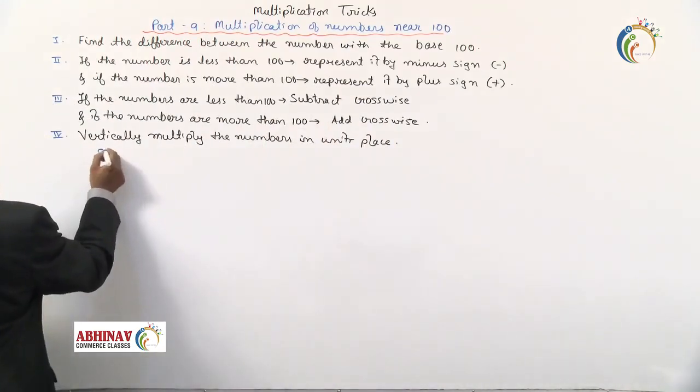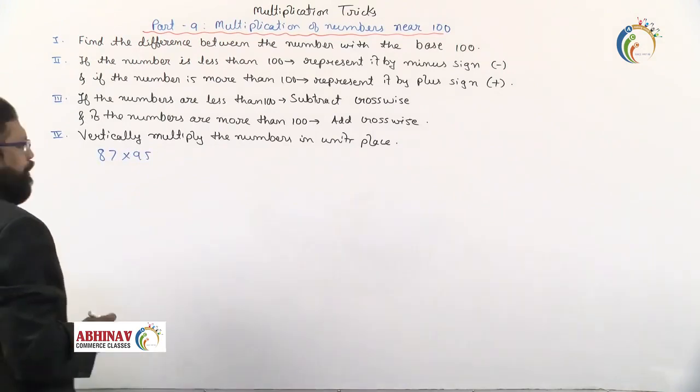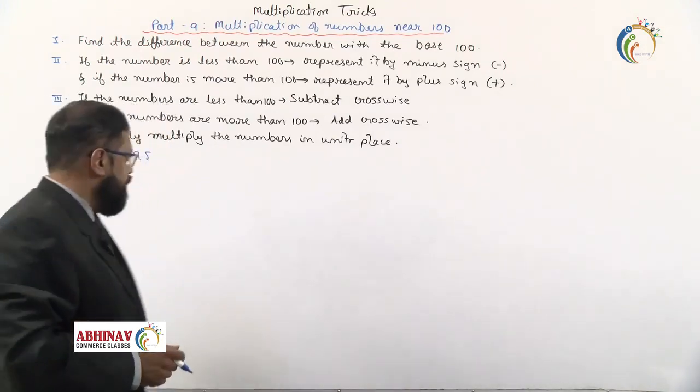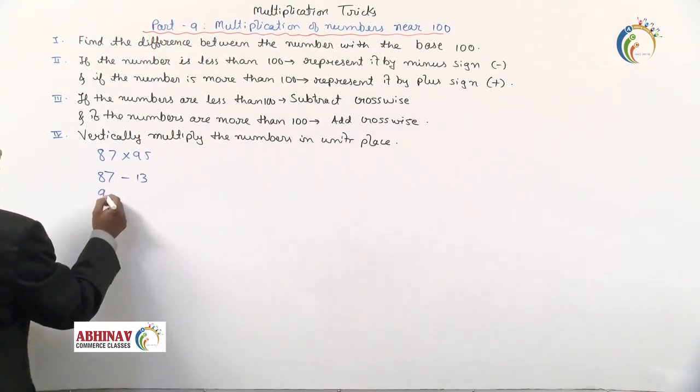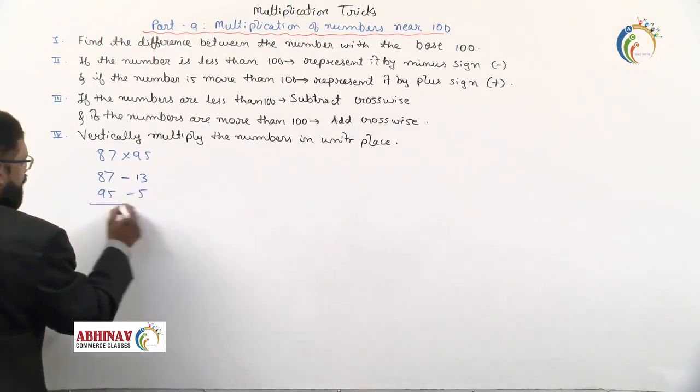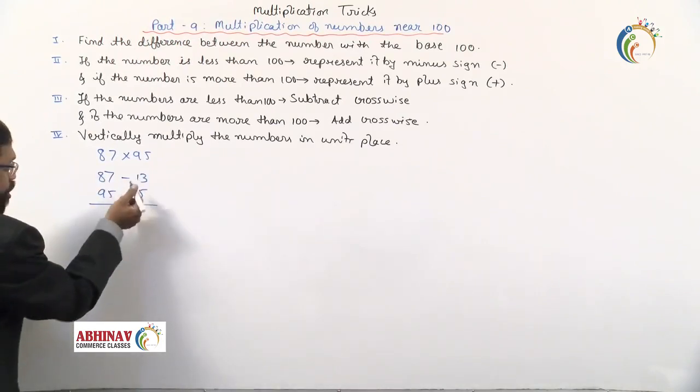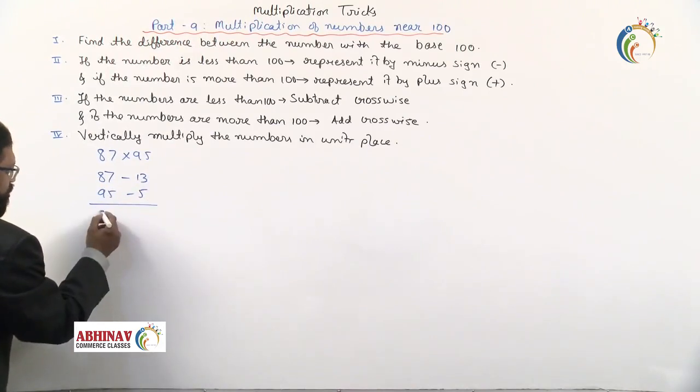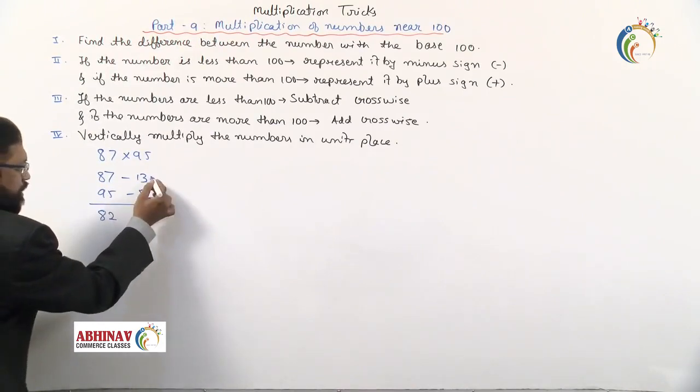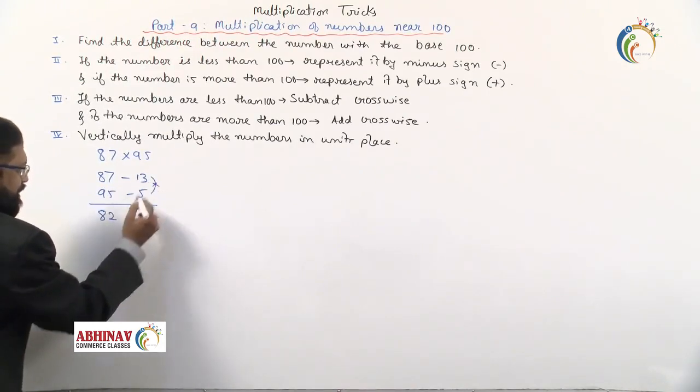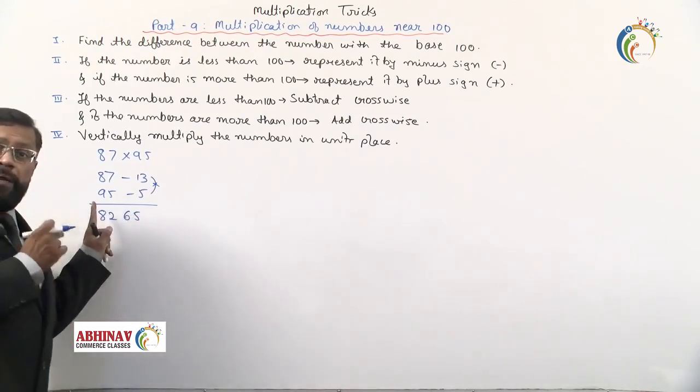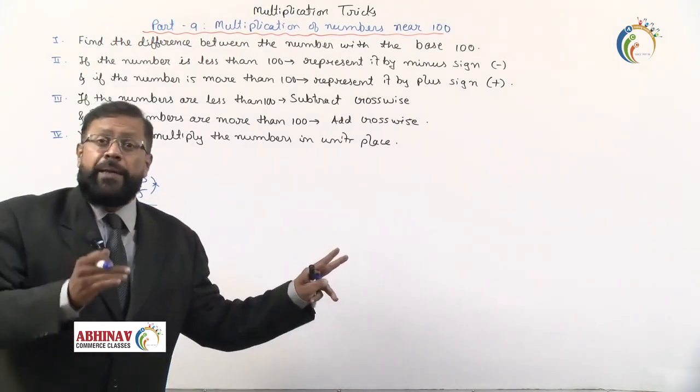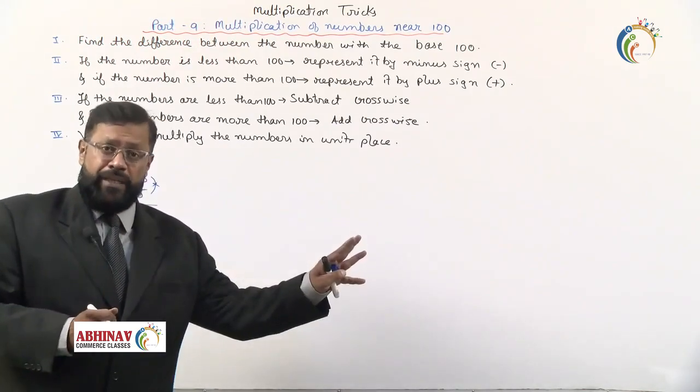Let's take 87 times 95. 87 is 13 less than 100, and 95 is 5 less than 100. We cross subtract: 87 minus 5 equals 82, and 95 minus 13 also equals 82. Then 13 times 5 equals 65. The answer is 8265. Don't carry forward 6 because you're multiplying by 100, so two digits are allowed.